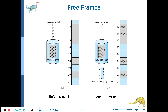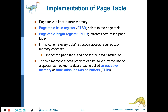Page 0 is allocated frame 14, page 1 is allocated frame 13, page 2 is allocated frame 18, and page 3 is allocated frame 20. So go to frame 14 — you get page 0; frame 13 — page 1; frame 18 — page 2; frame 20 — page 3. Earlier there were 5 free frames; now 4 have been allocated to this new process, so currently only one free frame is left in the system.